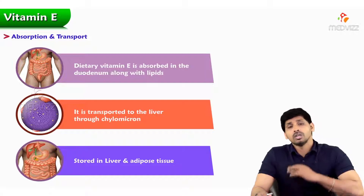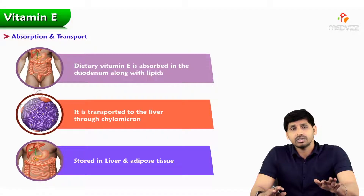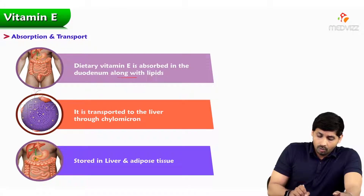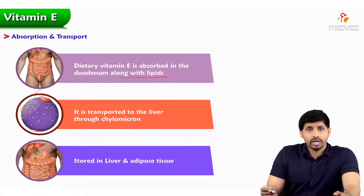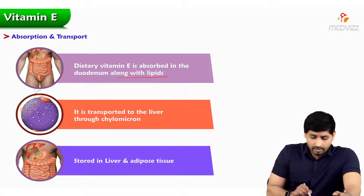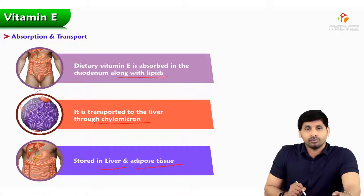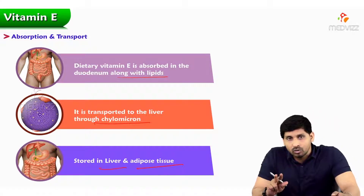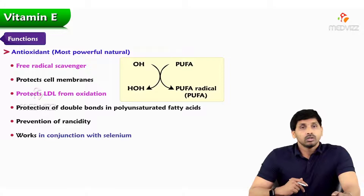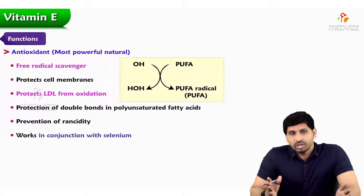For absorption and transport: dietary Vitamin E is absorbed like other fat-soluble vitamins — its digestion, absorption, and transport are similar to lipids. It is digested at the duodenum level and transported from the intestine to the liver via chylomicrons. It is stored in the liver and adipose tissue. That covers the chemistry, sources, absorption, transport, and storage of Vitamin E. Thanks for listening.